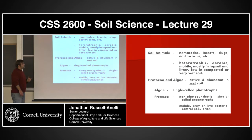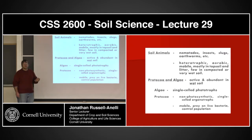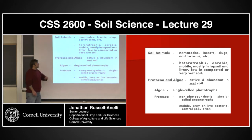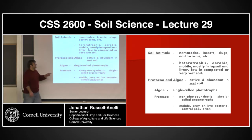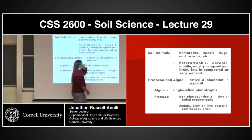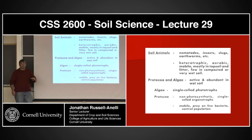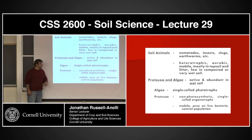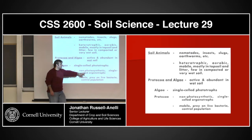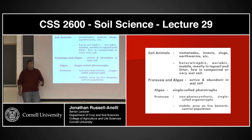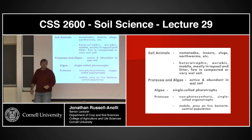The soil animals you'll see are nematodes, insects, slugs, and earthworms. These are all basically heterotrophic organisms — aerobic and mobile, mostly in topsoil and litter. There are few in compacted and very wet soils because they're aerobic. Protozoa and algae are very active and abundant in wet soils. Algae are single-celled phototrophs; protozoa are non-photosynthetic, single-celled organotrophs. Protozoa are very mobile and prey on the bacterial population — they're the predators on the trophic scale.